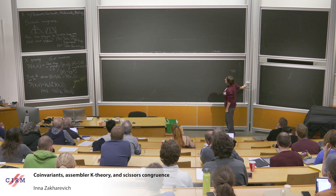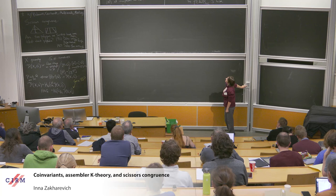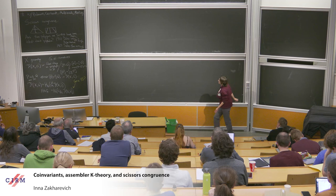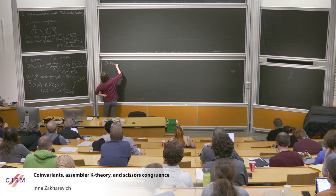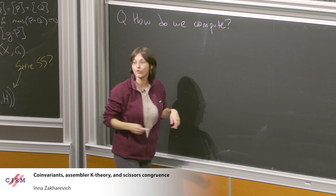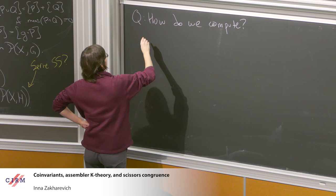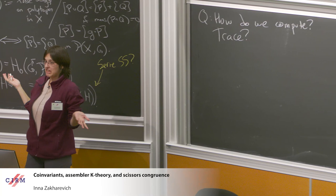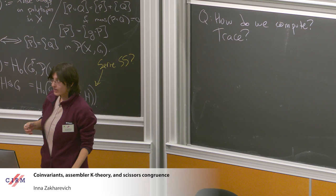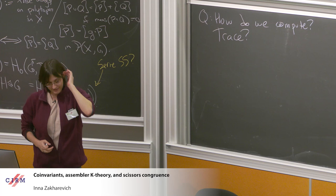Now we've gotten more questions. We still have the question of how to compute this, but now it's harder because it's K-theory — we have countably many groups instead of one. We can also ask: is there a trace? K-theory generally has a trace of some sort. What would it look like, and can we use it to compute anything? There's a proliferation of questions; I'll start trying to answer at least a few.